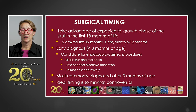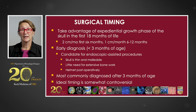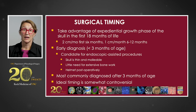Surgical timing for repair of craniosynostosis depends on when the child is diagnosed. We like to take advantage of the exponential growth phase of the skull which occurs in the first 18 months of life. A child's head grows approximately two centimeters per month for the first six months of life and one centimeter a month for six to 12 months. Early diagnosis is key. When children are diagnosed before three months of age, they can often be candidates for endoscopic assisted procedures, as the skull is thin and malleable. Unfortunately, most children are diagnosed after three months of age, making them not the best candidates for endoscopic approaches.